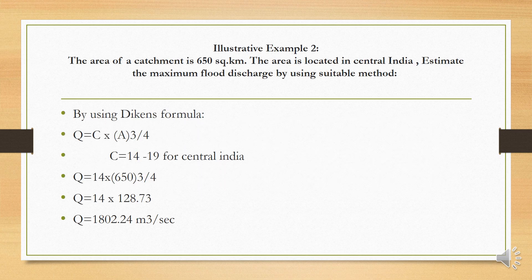Example 2: The area of catchment is 650 square kilometers, located in Central India. Estimate the maximum flood discharge. Since it is in Central India, we use Dickens formula. For Central India, C = 14 (using the lower range value). Q = 14 × 650^(3/4). Solving this gives maximum flood discharge = 1802.24 m³/s.